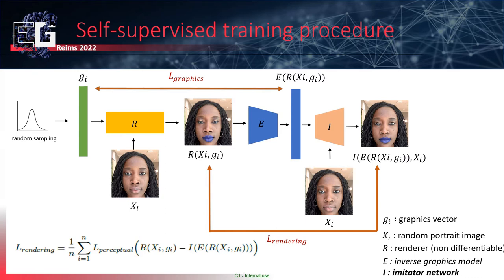To address the system's blindness to what happens in image space, we introduce an imitator network that emulates our renderer. The imitator is trained to generate the source image with lipstick as the black box renderer would. During training, a VGG perceptual loss compares the source image with lipstick generated by the black box renderer versus that generated by the imitator. An advantage of the imitator is that it is a differentiable renderer, allowing us to differentiate through the loss. Our training pipeline thus uses two losses: one comparing sampled graphic parameters with encoder-predicted parameters, and one comparing images generated by the black box renderer and the imitator.